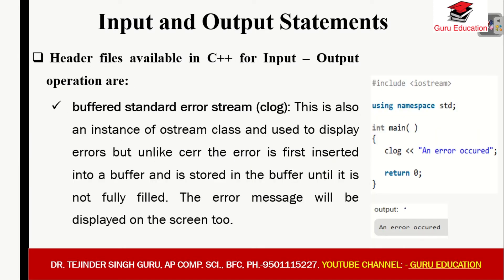Next is the buffered standard error stream: clog. This is also an instance of the ostream class, used to display errors. But unlike cerr, the error is first inserted into a buffer and stored there until the buffer is fully filled, after which the error messages will be displayed on the screen.